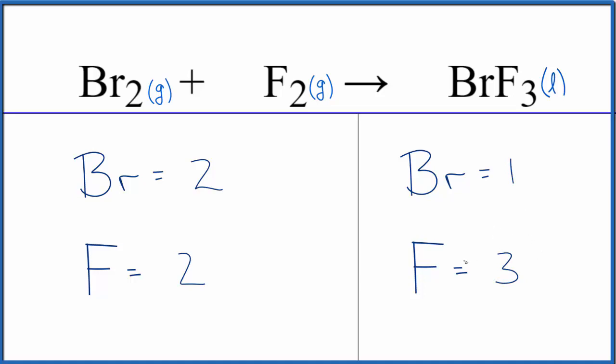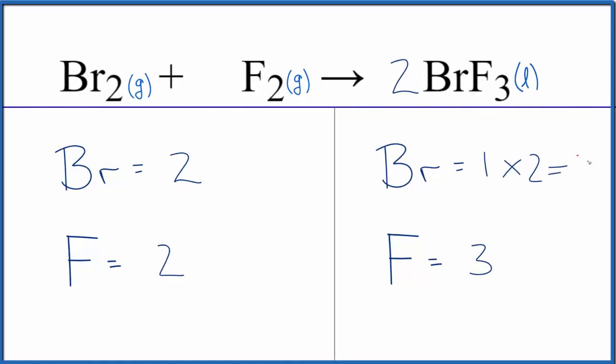Probably the best thing to do is try to get this to be an even number, and that should make the balancing easier. So if we put a two in front of the BrF3, we have the one bromine times two, that'll give us two of those. So those are balanced.